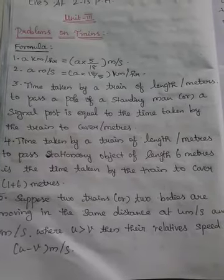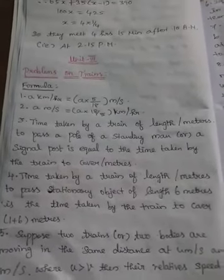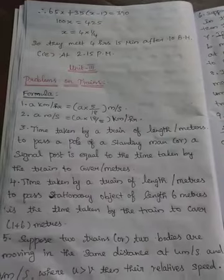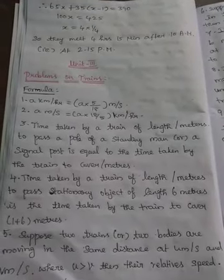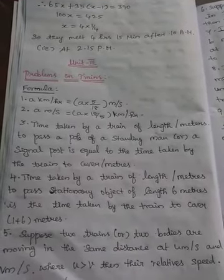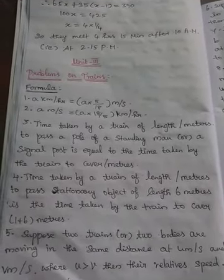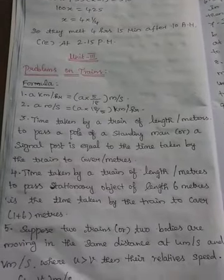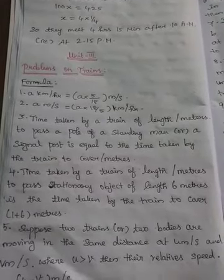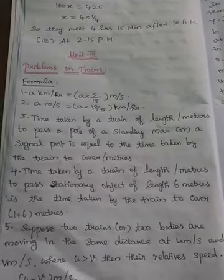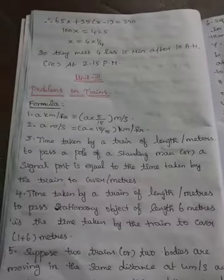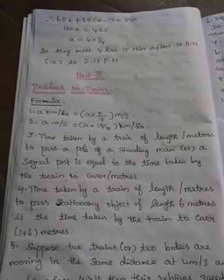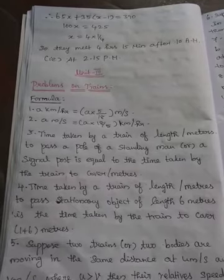Fourth one: time taken by a train of length L meters to pass a stationary object of length b meters is the time taken by the train to cover L plus b meters.